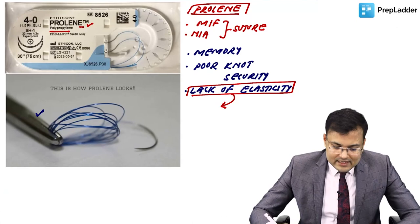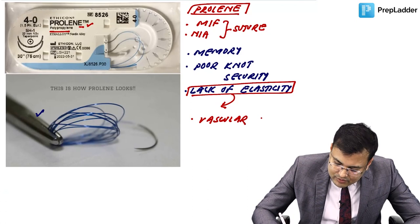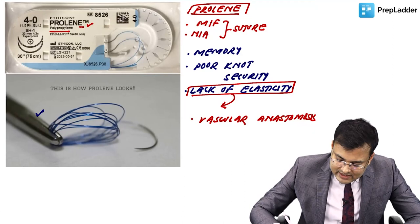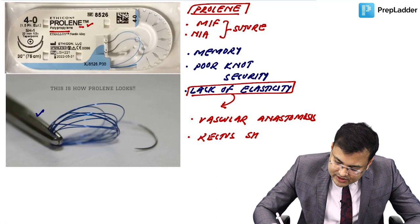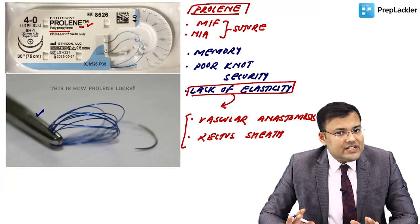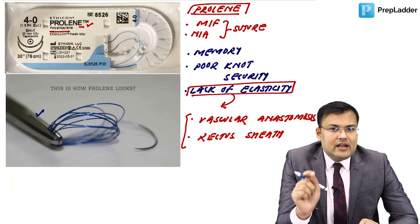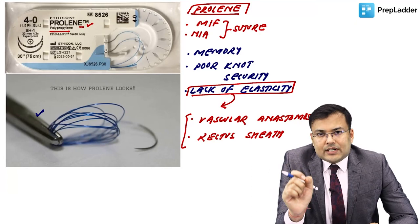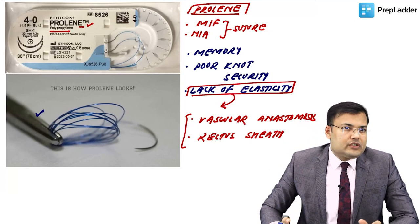Proline is used for vascular anastomosis because it can create watertight anastomosis, and it is also used for suturing the rectus sheath. Nylon is used for tendons.